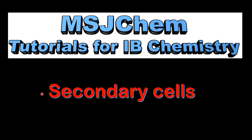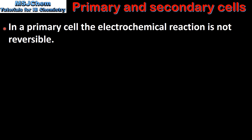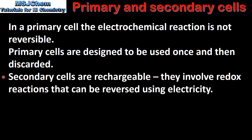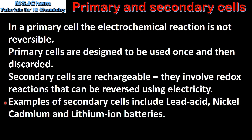This is MSJChem. In this video I'll be looking at secondary cells. We'll start by looking at the difference between a primary and secondary cell. In a primary cell the electrochemical reaction is not reversible; primary cells are designed to be used once and then discarded. Secondary cells are rechargeable — they involve redox reactions that can be reversed using electricity. Examples of secondary cells include lead acid, nickel cadmium and lithium ion batteries.